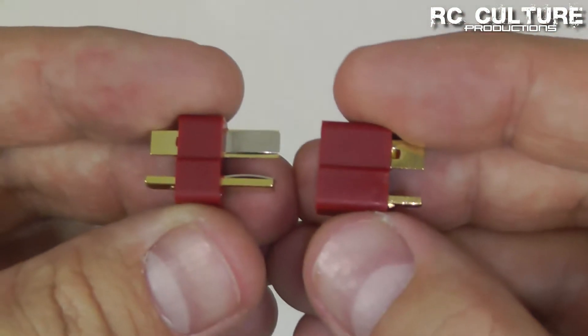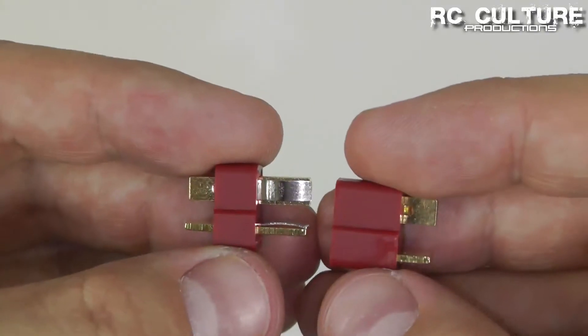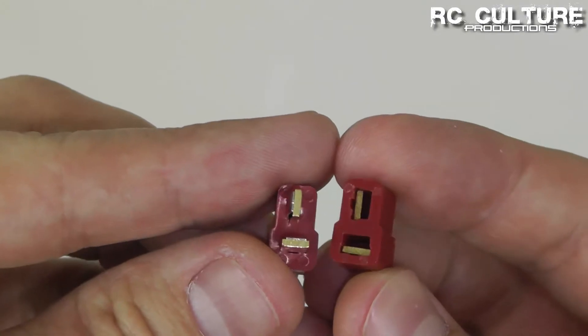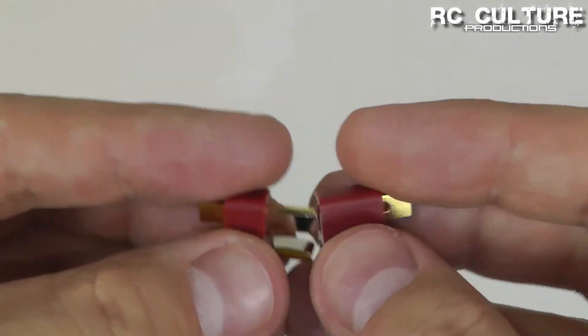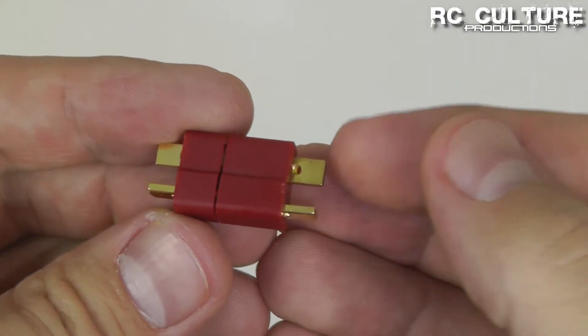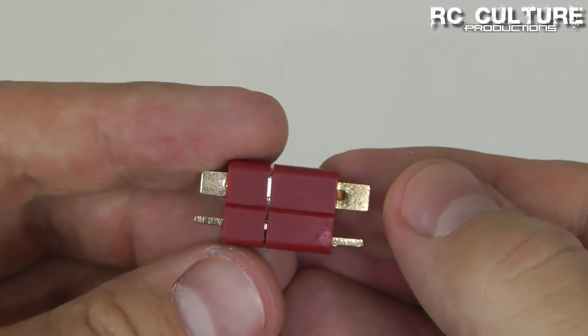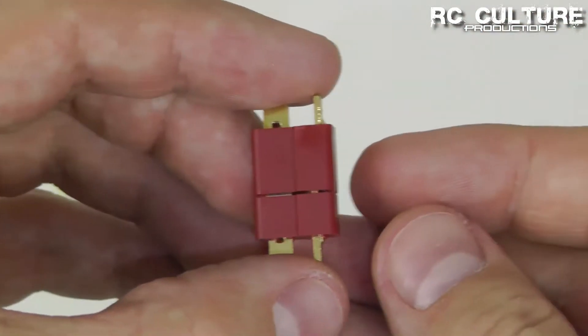A while after the Tamiya connector came along the Dean's connector, which is identified by this red shade of plastic typically but more importantly the shape. Again we have a female and a male side and they're arranged in a plus sort of configuration, half of a plus basically, and they just slide together one way and our wires are soldered onto either side. This is the type of connector that we're going to be soldering today, but there's been several other connectors that have come along after this.